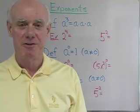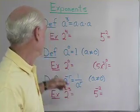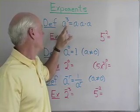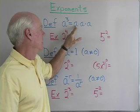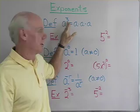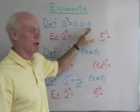Let's look at our first set of definitions for exponents. Our first definition has to do with positive integer exponents. a to the third power is defined to be a times a times a. So when your exponent's a positive integer like this, exponents represent repeated multiplication.